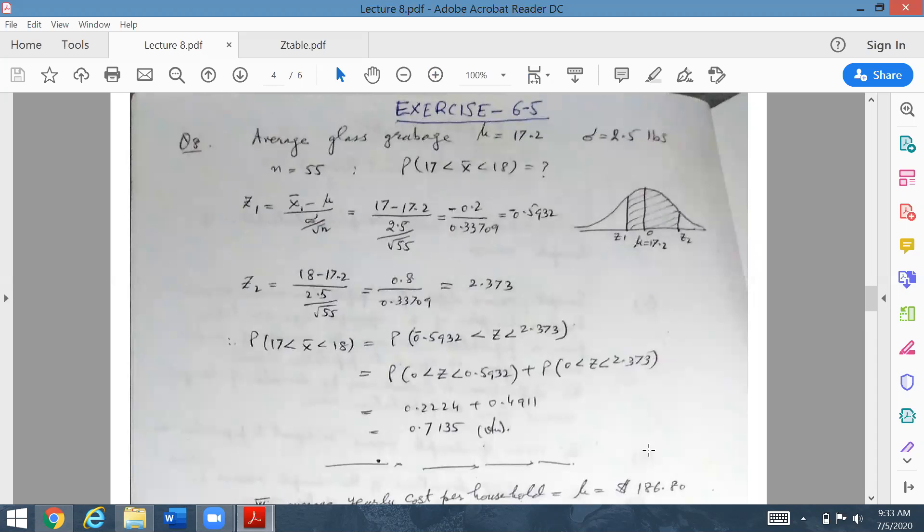In front of you is the solution. Average glass garbage is 17.2, sigma is 2.5 pounds, and sample size is 55. You are to find the probability that average garbage is from 17 pounds to 18 pounds. Because two x bar values are with us, z1 formula is x1 bar minus mu upon sigma over root n. For x1 you put 17, for mu 17.2, sigma is 2.5, and root n is root 55.